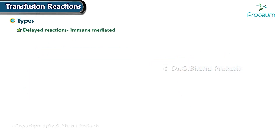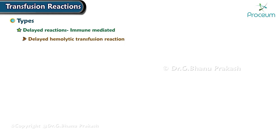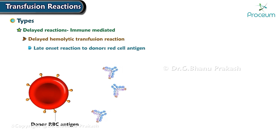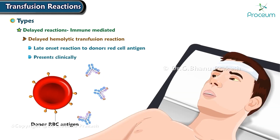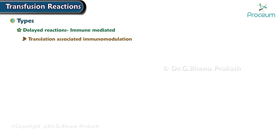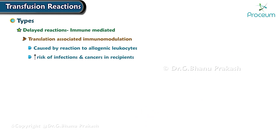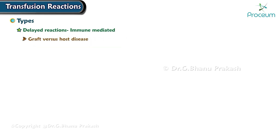Delayed immune-mediated reactions: delayed hemolytic transfusion reaction is a late onset reaction to donor red cell antigen, presenting clinically as fever and mild jaundice. Transfusion-associated immunomodulation is caused by reaction to allogeneic leukocytes and increases the risk of infections and cancers in recipients.